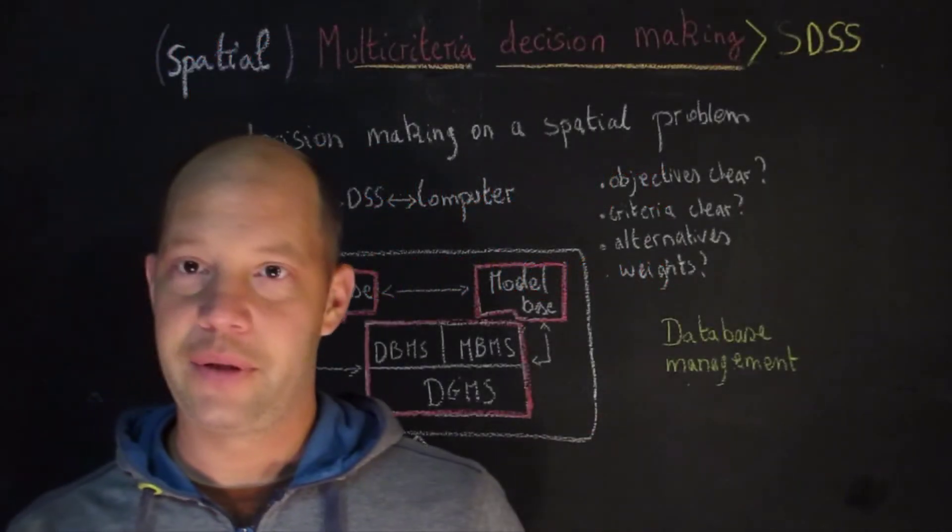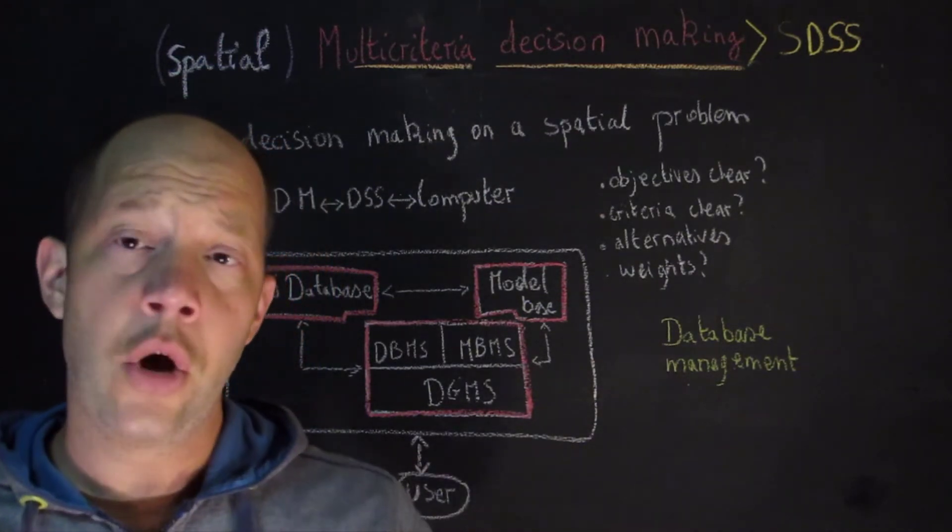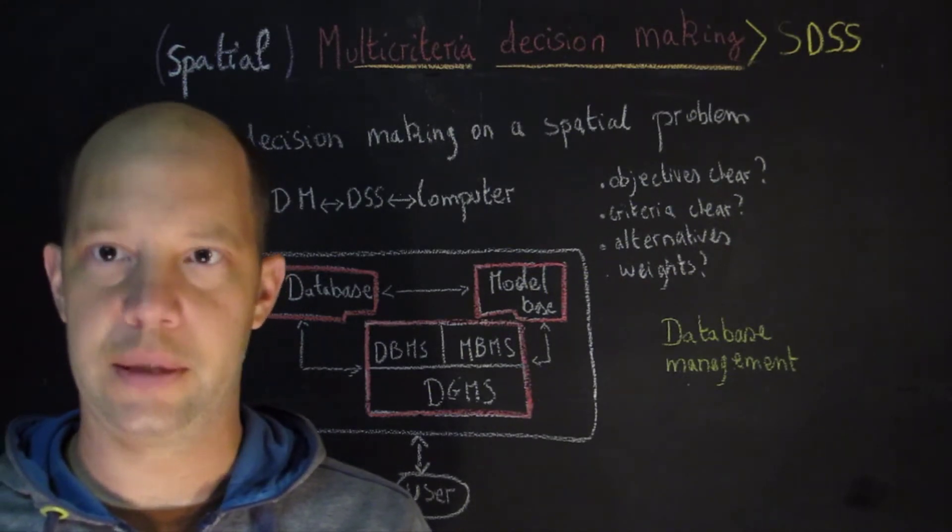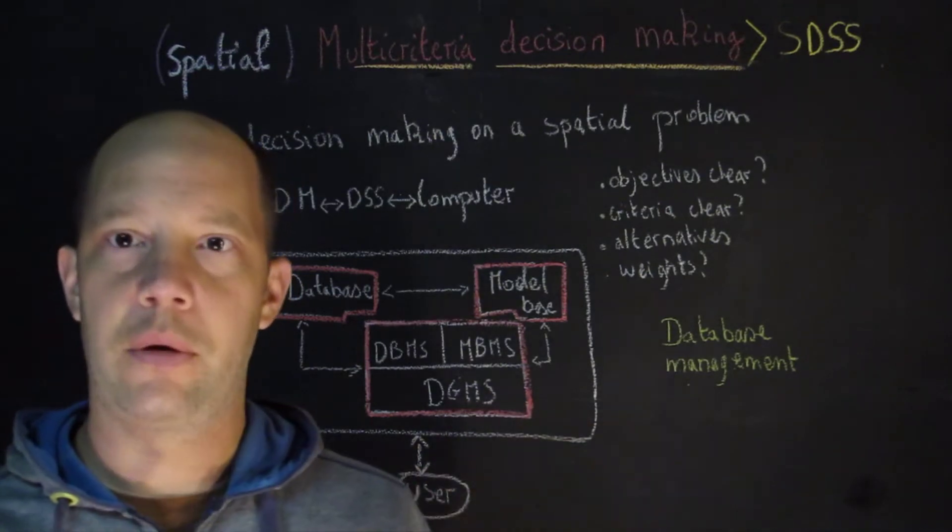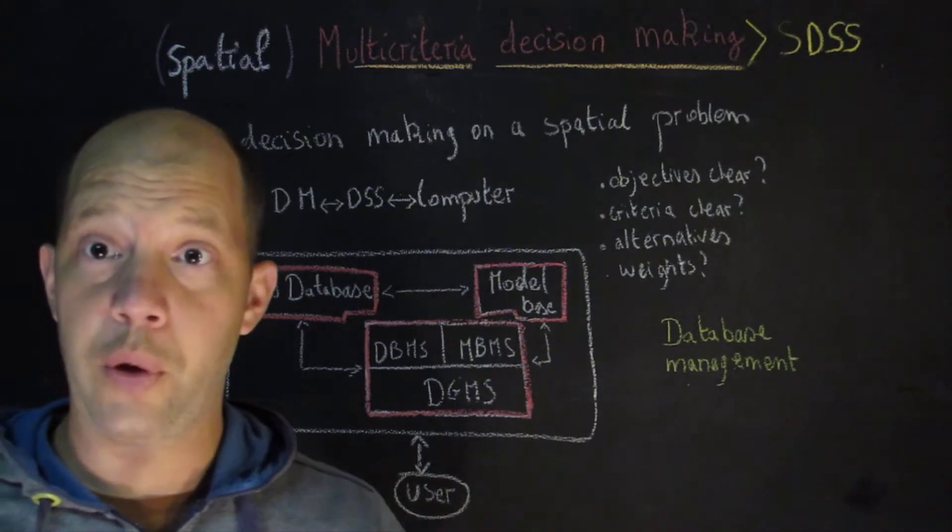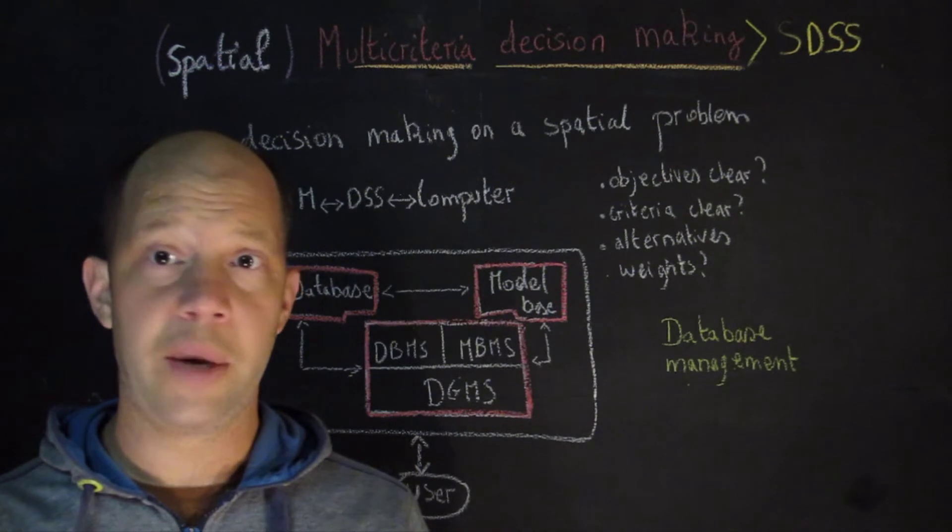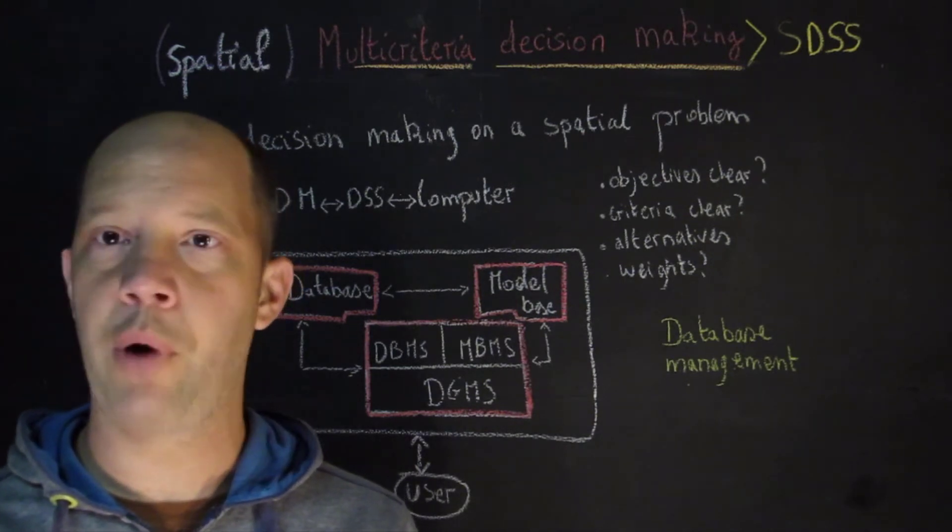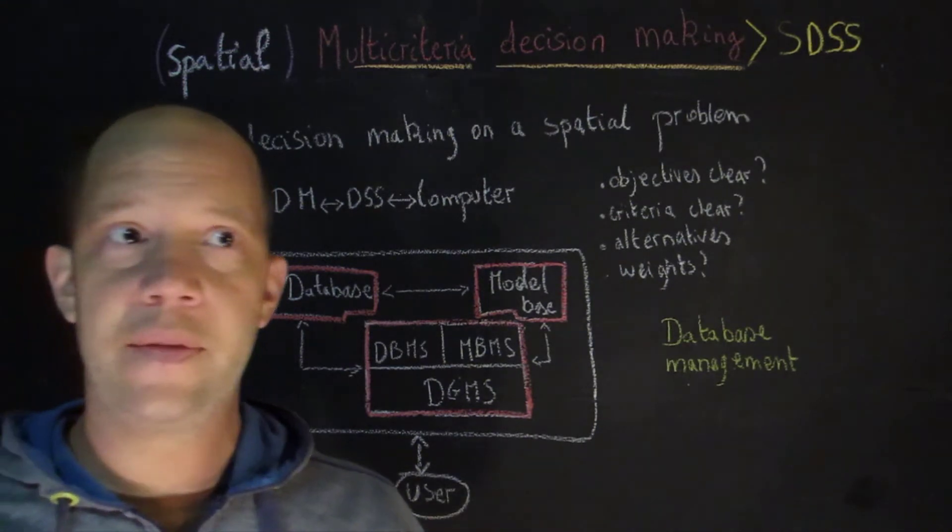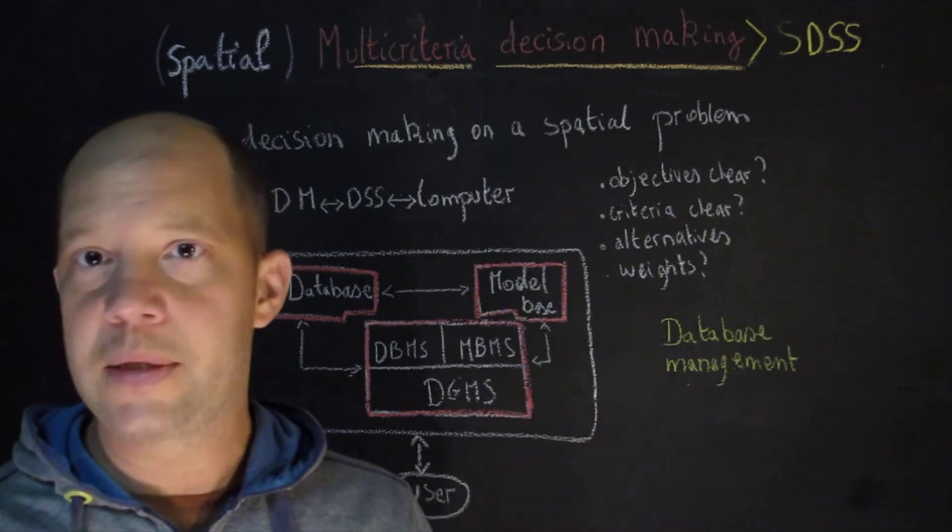Our last topic in multi-criterion decision making is about spatial multi-criterion decision making, or what I will call SDSS for spatial decision support system. So what we are actually dealing with right now are problems of spatial nature, problems that actually require or use spatial data. In the example I provided earlier, we are mostly talking about non-spatial problems such as an apartment. Unless you think that maybe the distance to school or distance to park is something spatial, the problem is not really spatial per se.